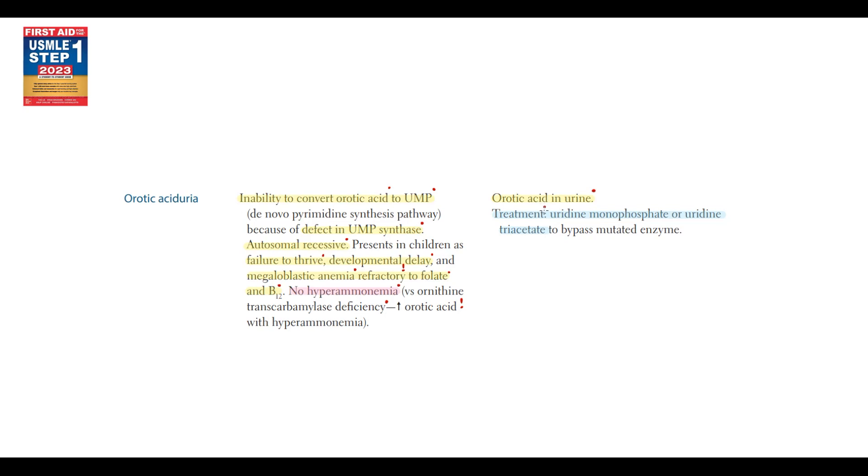The signature feature of this disorder is increased erotic acid level in the urine. And the treatment is uridine monophosphate or uridine triacetate, which helps us to bypass the mutated enzyme. So how does treatment work?